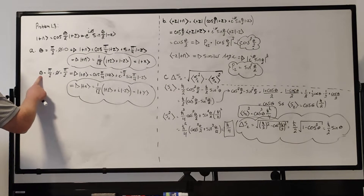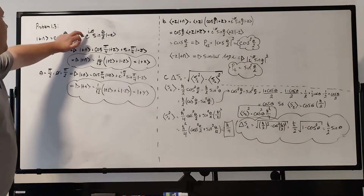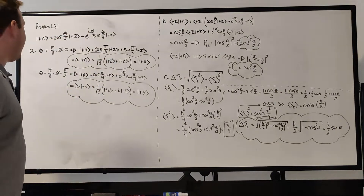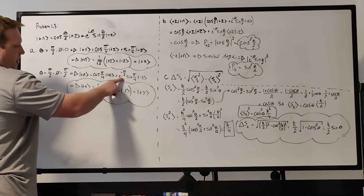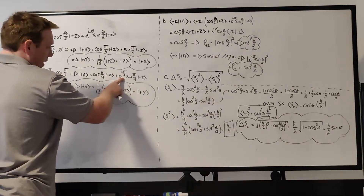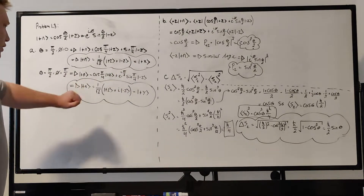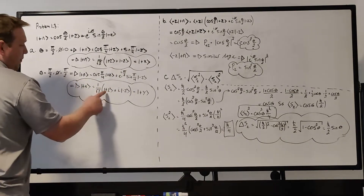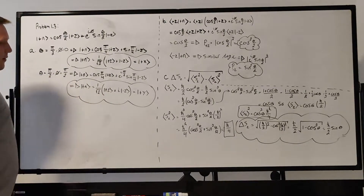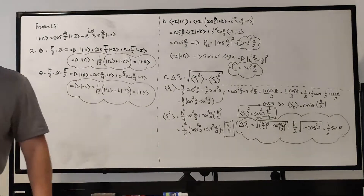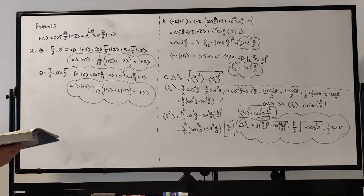If we keep theta equal to π/2 but change phi to π/2, then e^(iπ/2) equals i. So the exponential term doesn't go away — we get an i — and those two coefficients still evaluate to 1/√2. Factoring out, we get (1/√2)|+z⟩ + (i/√2)|−z⟩, which is the state |+y⟩. That part is pretty easy, you just have to think about it for a second.